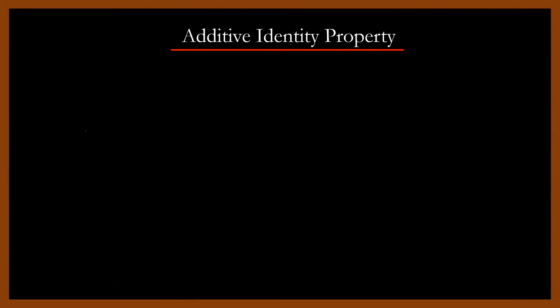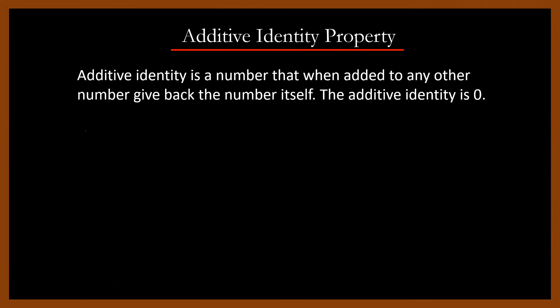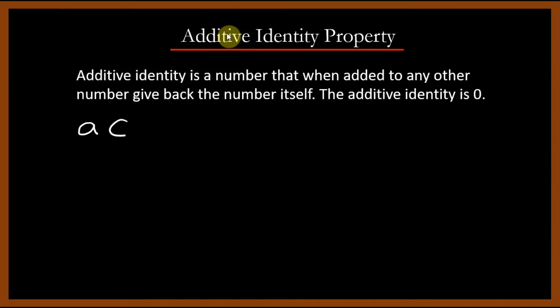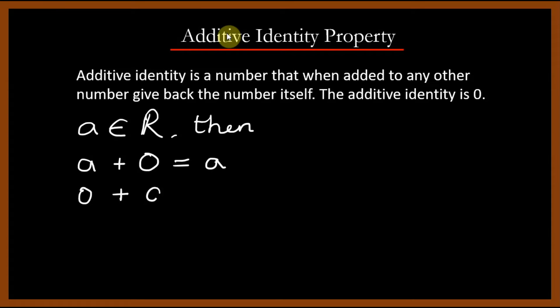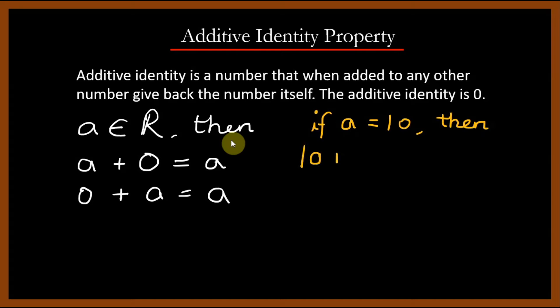The additive identity is a number that when added to any number, gives back the number itself. The additive identity is 0, because if we add 0 to any number, the result is going to be the same number, which is called the additive identity property. Suppose A is a number, then A plus 0 is equal to A. Also, 0 plus A is equal to A. For example, if A is equal to 10, then 10 plus 0 is equal to 0 plus 10, which is equal to 10.